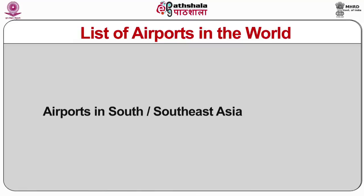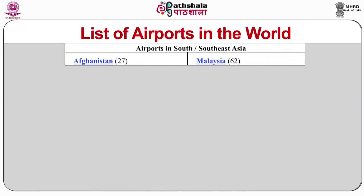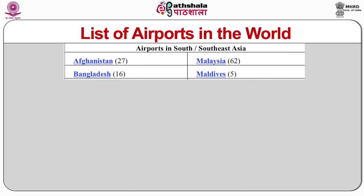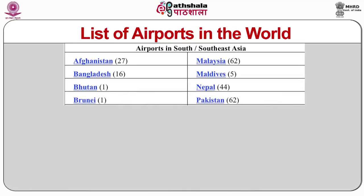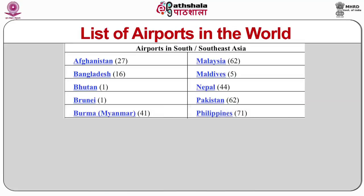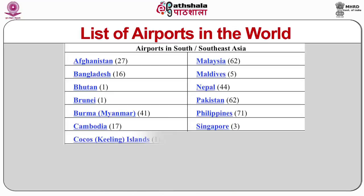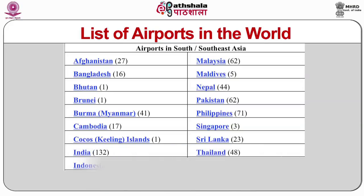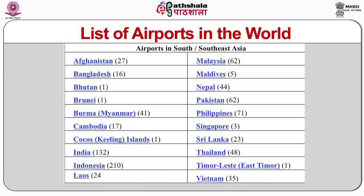Let us now discuss airports in South and Southeast Asia. Afghanistan has 27 airports, Malaysia 62, Bangladesh 16, Maldives 5, Bhutan 1, Nepal 44, Brunei 1, Pakistan 62, Burma/Myanmar 41, Philippines 71, Cambodia 17, Singapore 3, Cocos Keeling Islands 1, Sri Lanka 23, India 132, Thailand 48, Indonesia 210, Timor-Leste (East Timor) 1, Laos 24, and Vietnam 35 airports.